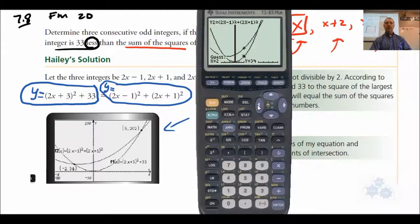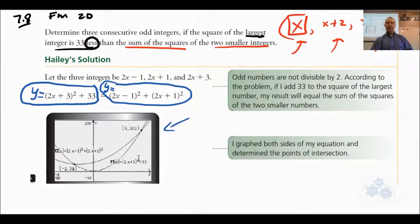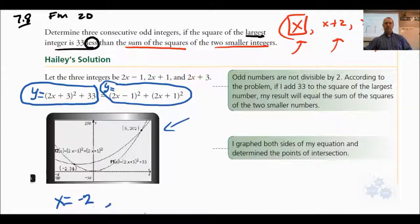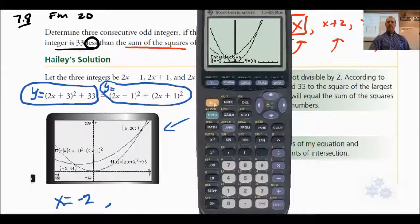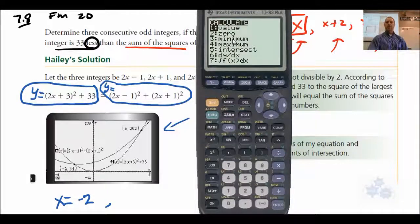We want to find intersections, so go down to 5 or just hit the number 5 button. It's going to say first curve, second curve. First curve, yes. Second curve, sure. And guess - I'm going to cursor back and put my cursor close to the intersection point over here because I want to find this one first. Let it think for a second. Negative 2, 34, and that's what we have here in the book. Negative 2, 34. So that means for us that one possible x value is negative 2.